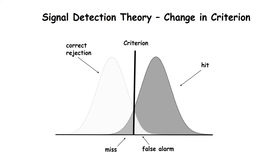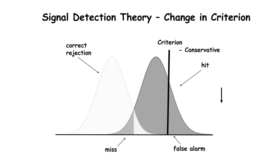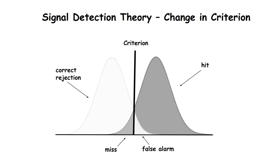Changes in decision criterion result in specific changes in the distribution of these choices. Changes in the criterion leading to more conservative decisions result in decreases in both hits and false alarms. And changes in the criterion leading to more liberal decisions result in increases in hits and false alarms.